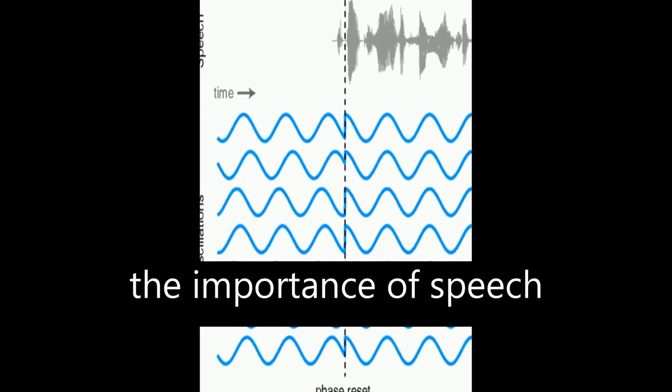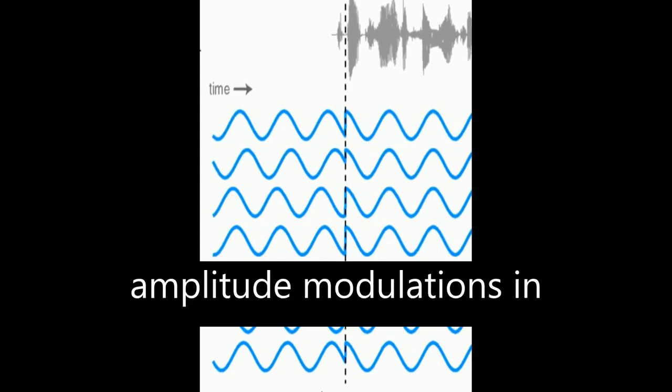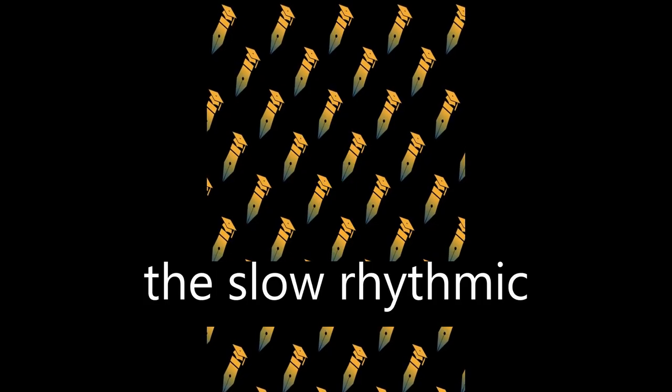The article discusses the importance of speech rhythm and how it is conveyed through amplitude modulations in the slow rhythmic information contained in speech.